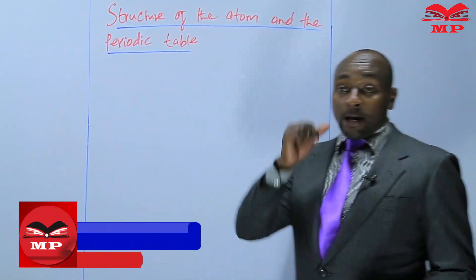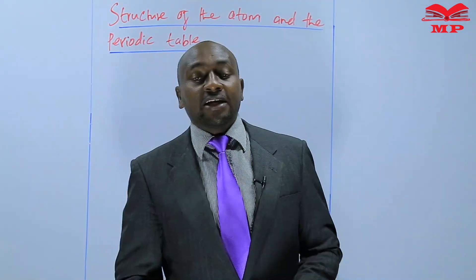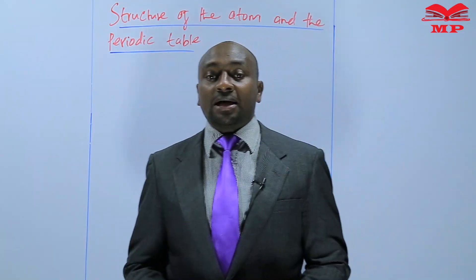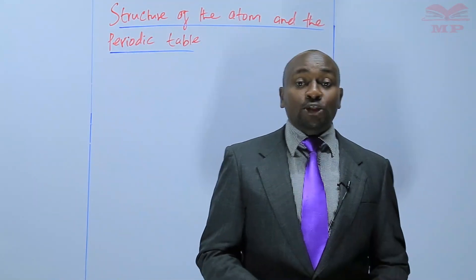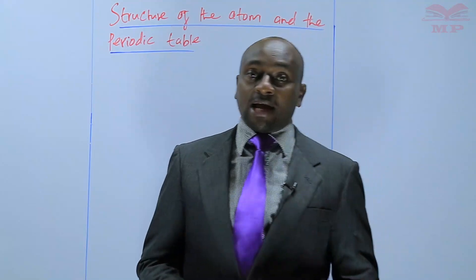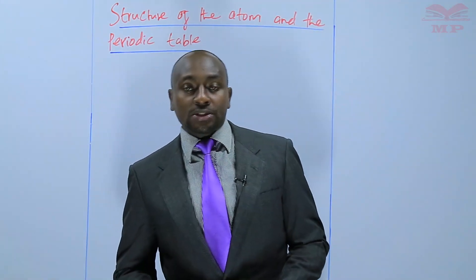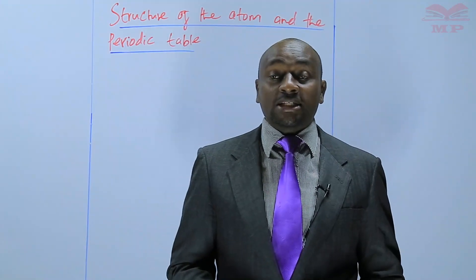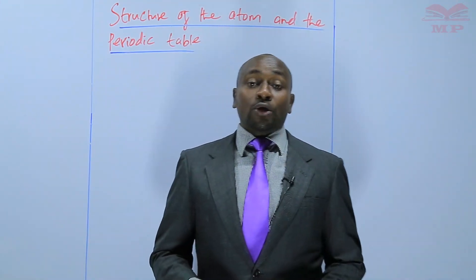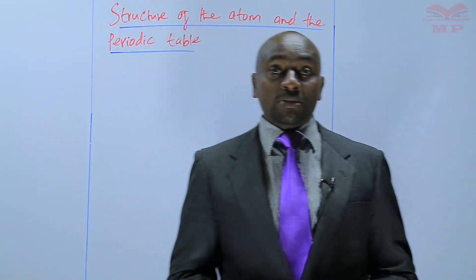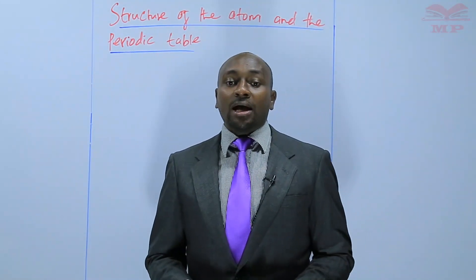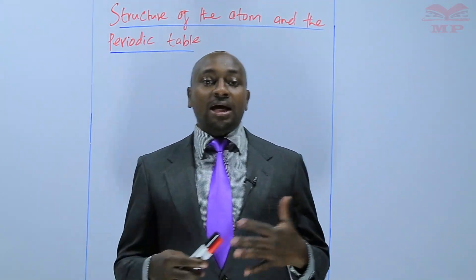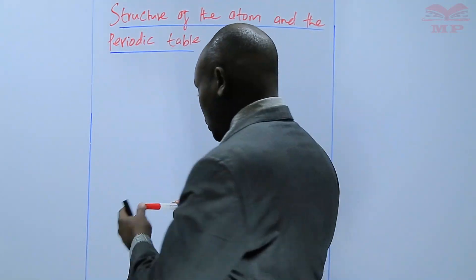During our first lesson, we defined what is an atom. We also named the three subatomic particles that are found within the atom — that is the protons, the electrons, and the neutrons. We also looked at their charges. Today I want us to look at examples of atoms and then arrange the protons, the electrons, and the neutrons.